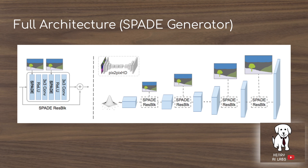Another interesting thing to note is that the segmentation mask is downsampled at each intermediate representation. It goes from roughly a 100-by-1 vector all the way up to a high-resolution, perhaps 1024-by-1024 RGB photorealistic image. During the upsampling of the generator, the segmentation mask is downsampled and put through two convolutional layers, forming the mean-variance parameters of the normalization layer across the generator's intermediate feature maps.